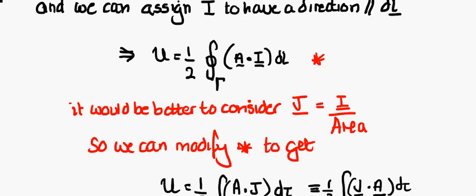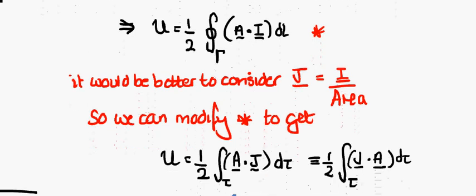Following this through, we could change our path integral such that we now have our A vector dot product with our current as our path integral. What we can do is transform from considering current to considering our current density, which is current over area. That means we have to change from a path integral to a volume integral. So we have our current density dot product with our magnetic vector potential, A dot J. It doesn't matter if we use J dot A or A dot J, they're equivalent.